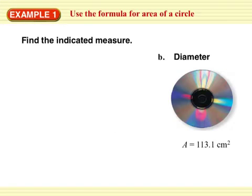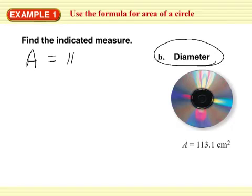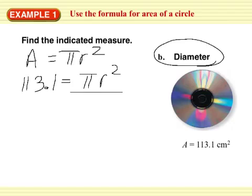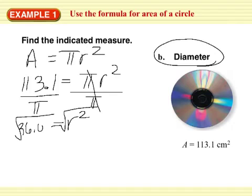Find the indicated measure. Here we're given the area, and they want us to find diameter. So pi r squared. We know area, 113.1 equals pi r squared. If I'm trying to solve for diameter, I really want to figure out what my radius is, because diameter is twice the radius. So radius squared equals 113.1 divided by pi. Radius squared is 36.0. Square root of both sides, your radius is 6. Pretty simple.